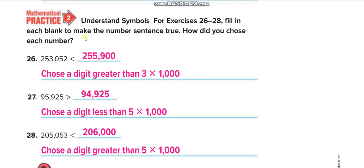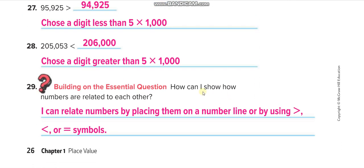Here they give you some equations and want you to make them true: write a number greater than this one, less than this one, and greater than this one. And the final question — how can we show how numbers are related to each other? We do it using the symbols: greater than, less than, or equal to. I hope you guys understand the lesson.